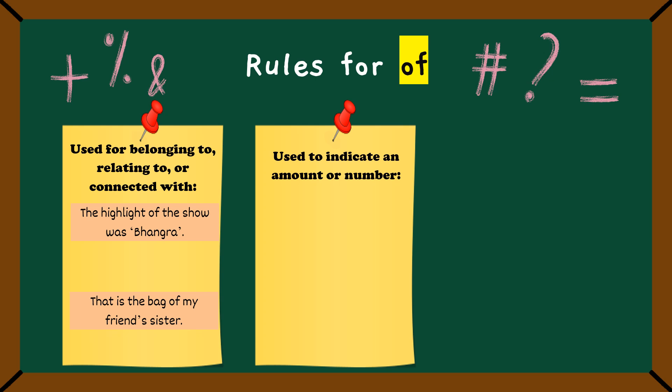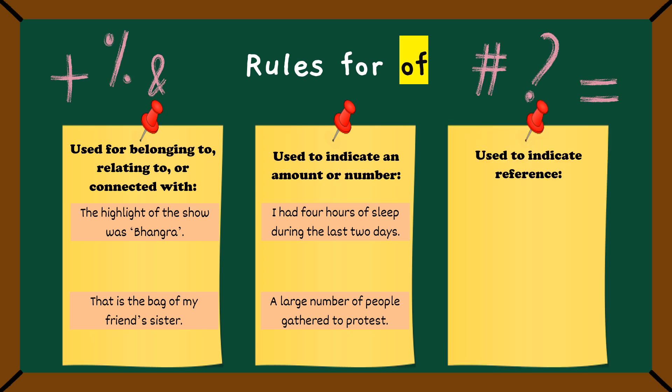Rule number two: of can also show the amount or number of something. Like, I had four hours of sleep. That means I got four hours worth of sleep, not much. Or, a large number of people gathered to protest. Here, of connects number with the group of people. It's how many people were there.